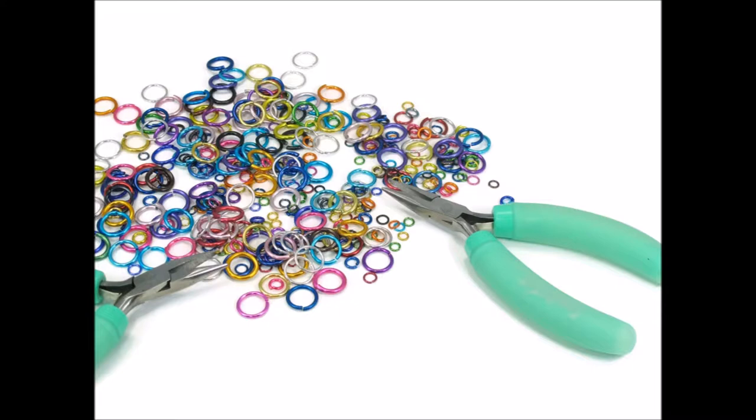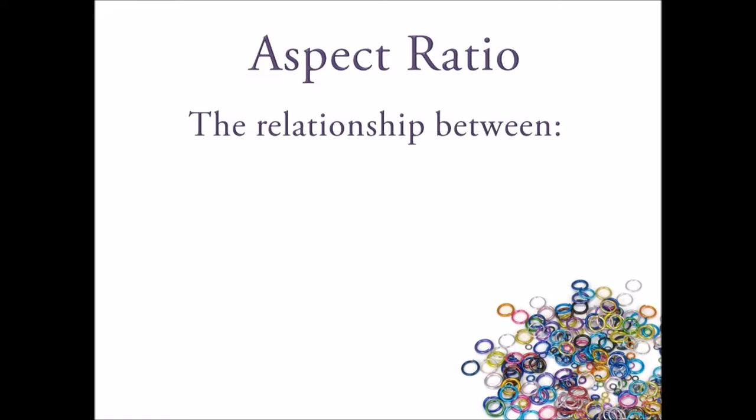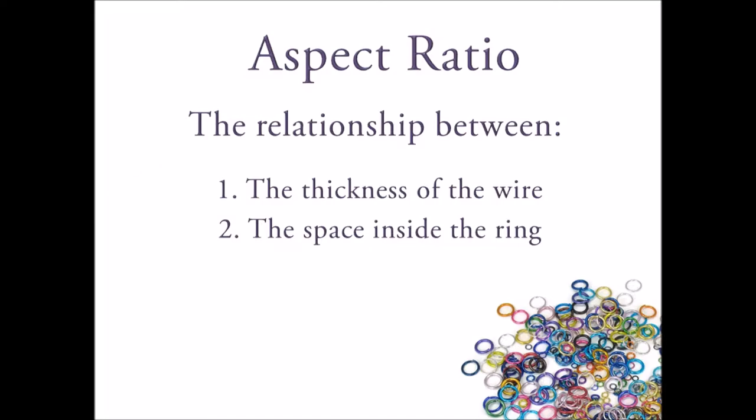When asking the question of what size jump rings you need, the answer is always aspect ratio. The term aspect ratio also has applications in electronics and aeronautics, but for the purposes of chainmail, aspect ratio is the relationship between the thickness of the wire and the space inside the ring. Let me briefly demonstrate what this means.